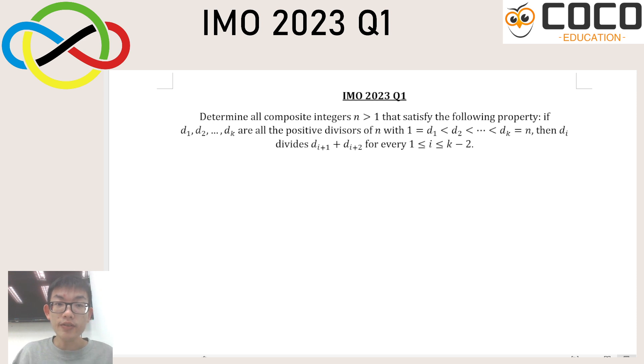To read the question, we are asked to determine all composite integers n greater than 1, such that if we list out all of the divisors in ascending order, then a divisor should divide the sum of the next two divisors.